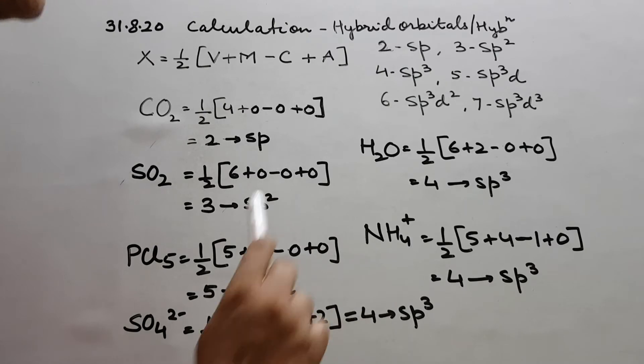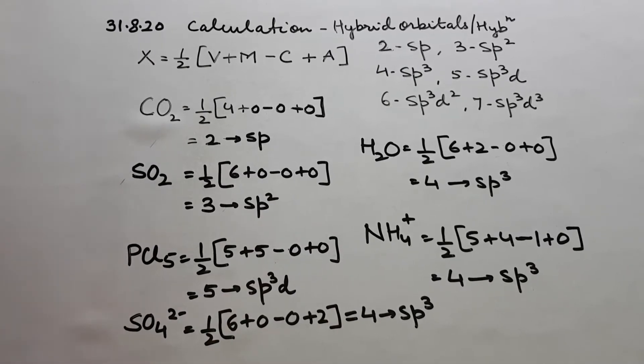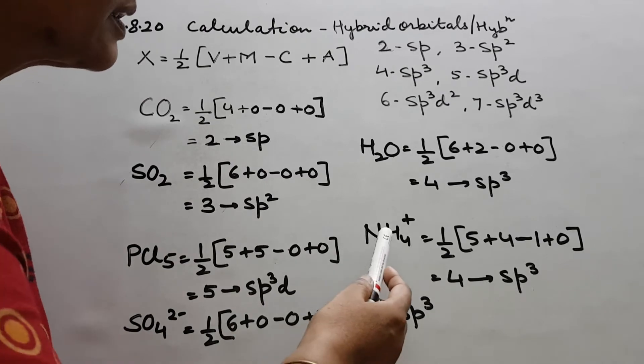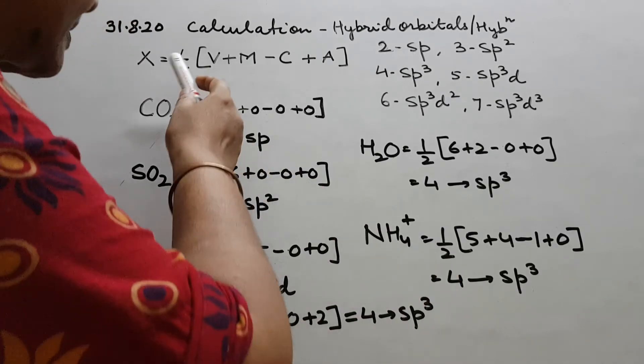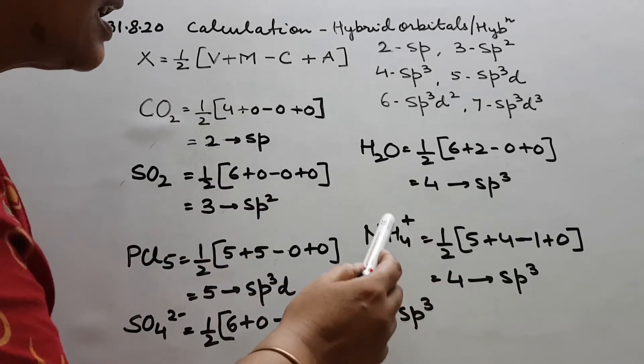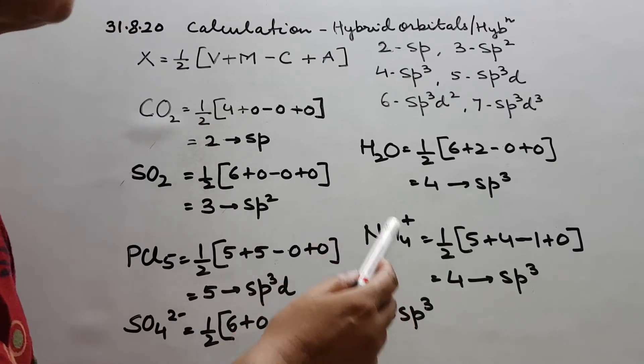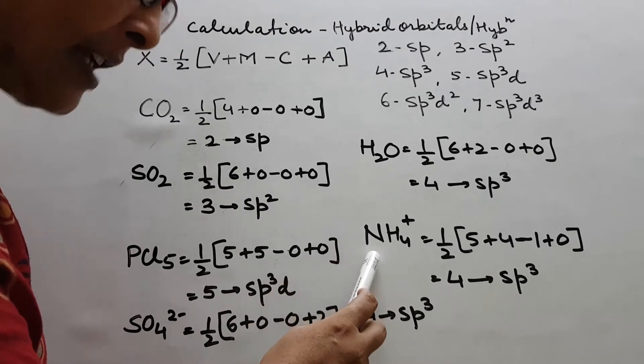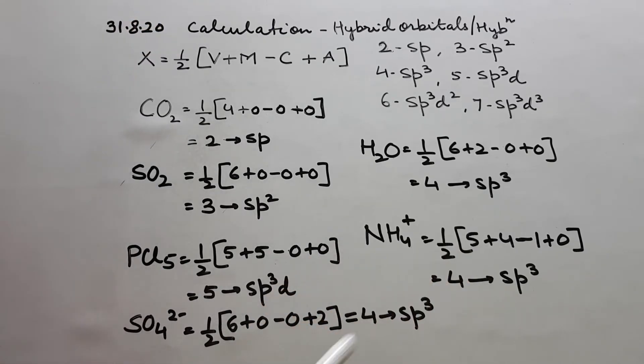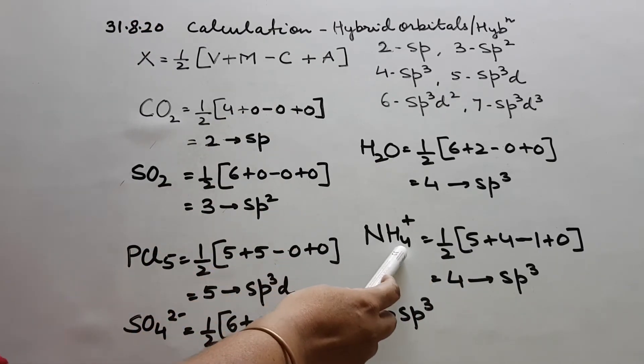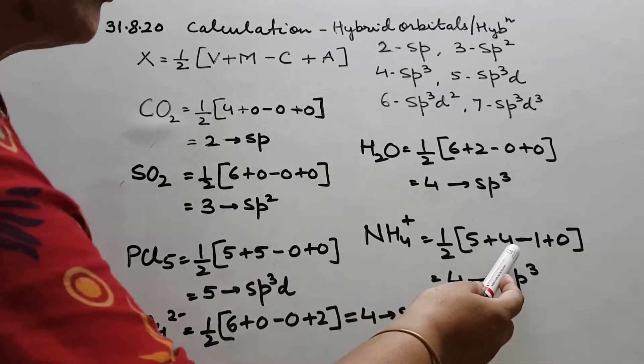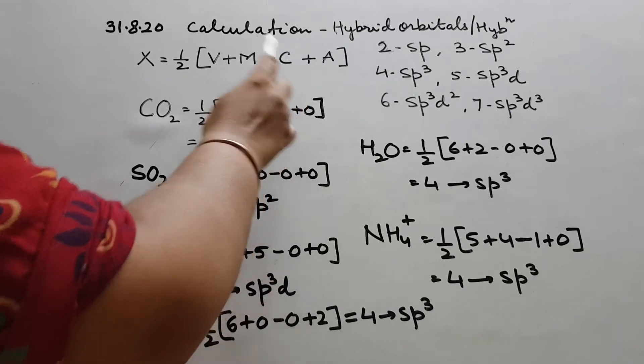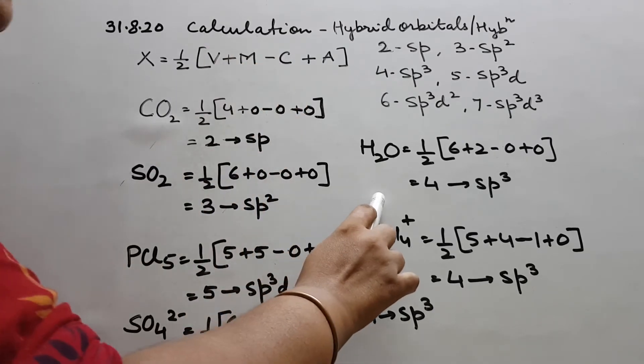Similarly, if I go for NH4 plus. See, I have taken one example for the cation also. So here NH4 plus, formula says half. Then number of electrons in the valence shell of central atom, N is 5. N is the central atom having 5 electrons. And the neighboring atoms, all 4H, monovalent atoms, 4.